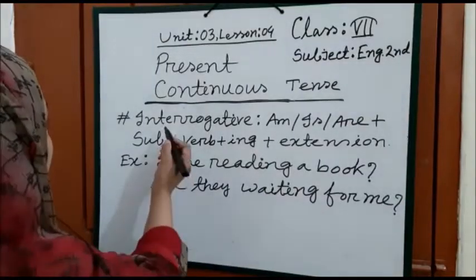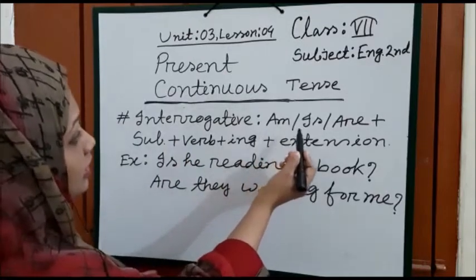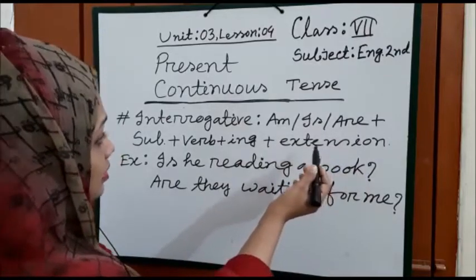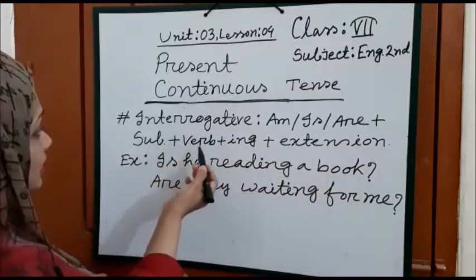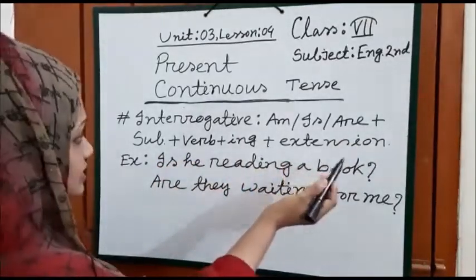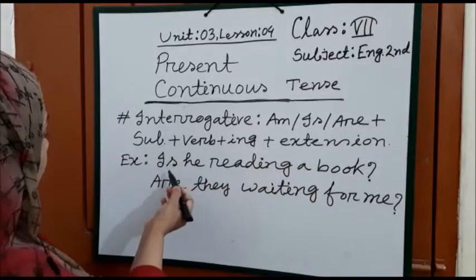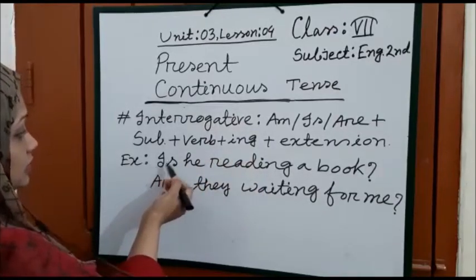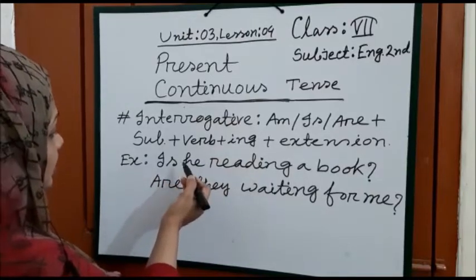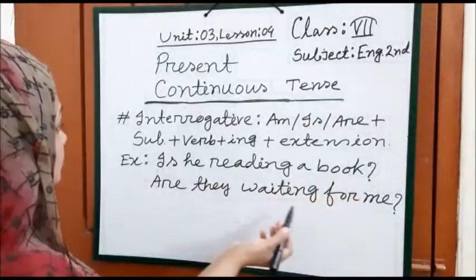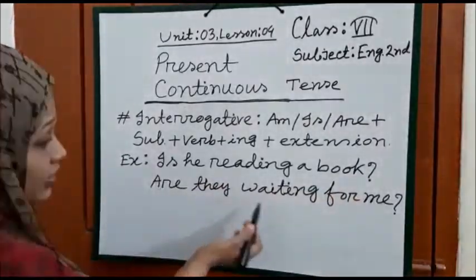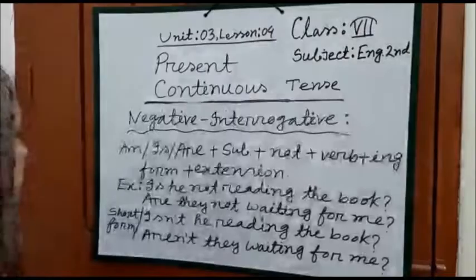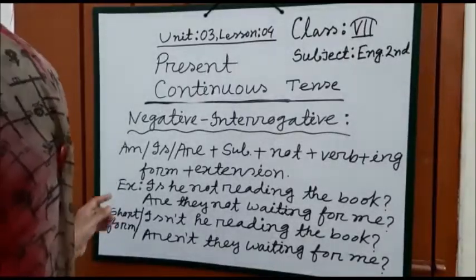Now we see the interrogative form. In interrogative form the auxiliary verb am/is/are is written in the first place, then subject + verb + ing + extension. For example: Is he reading a book? — we transfer the auxiliary verb before the subject. There will be a question mark of course. Another example: Are they waiting for me? The same structure is followed.